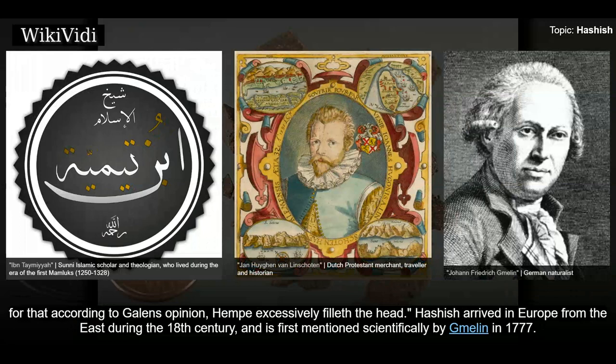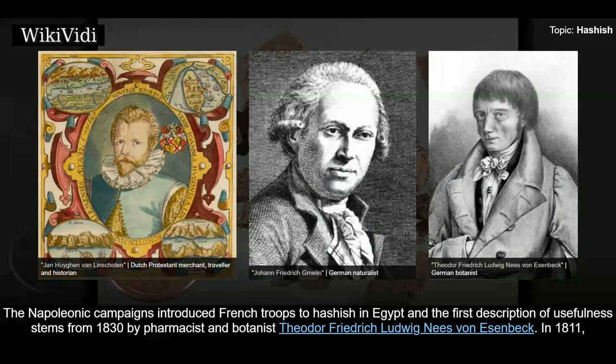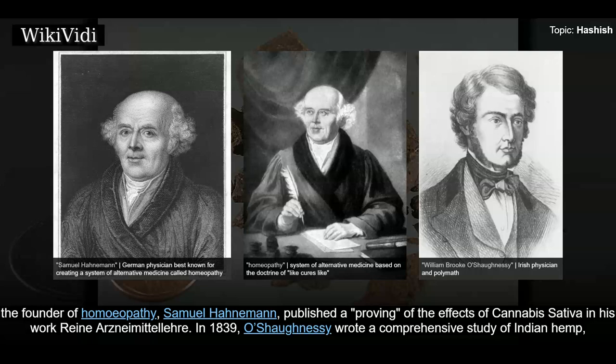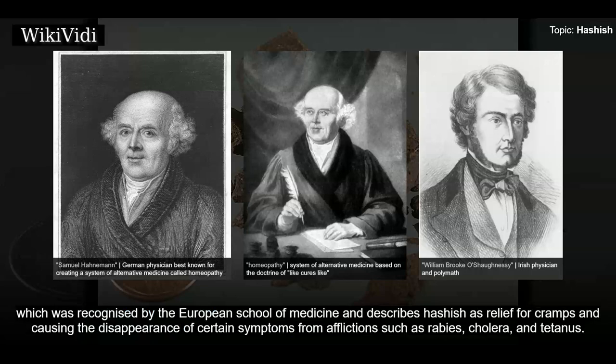Hashish arrived in Europe from the east during the 18th century and is first mentioned scientifically by Gamalien in 1777. The Napoleonic campaigns introduced French troops to hashish in Egypt, and the first description of its usefulness stems from 1830 by pharmacist and botanist Theodore Friedrich Ludwig von Eisenbeck. In 1839, O'Shaughnessy wrote a comprehensive study of Indian hemp, recognized by the European School of Medicine, describing hashish as relief for cramps and as causing the disappearance of symptoms from rabies, cholera, and tetanus.